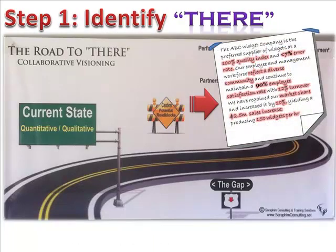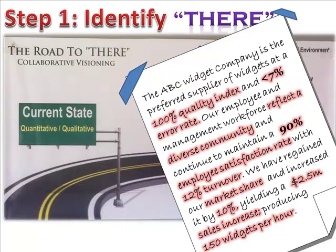Here's an example. The ABC Widget Company is the preferred supplier of widgets at a 100% quality index and less than 7% error rate. Our employee and management workforce reflect a diverse community and continue to maintain a 90% employee satisfaction rate with 12% turnover. We have regained our market share and increased it by 10%, yielding a $2.5 million sales increase producing 150 widgets per hour.